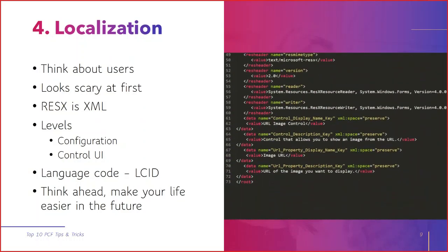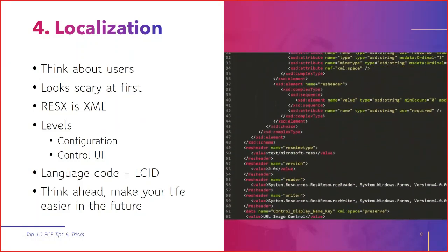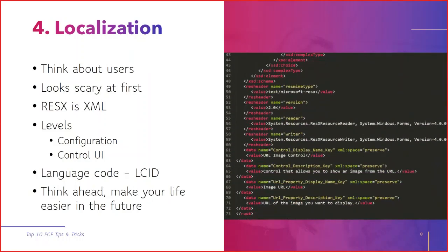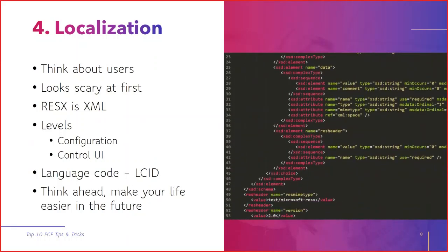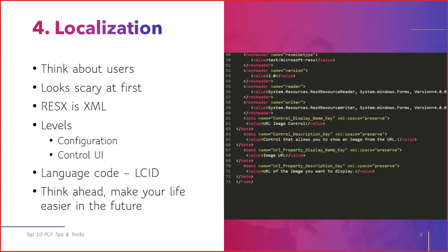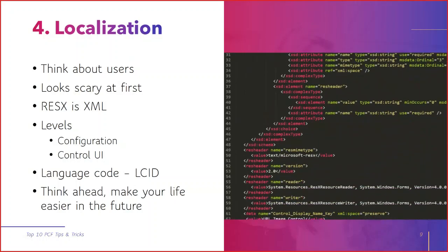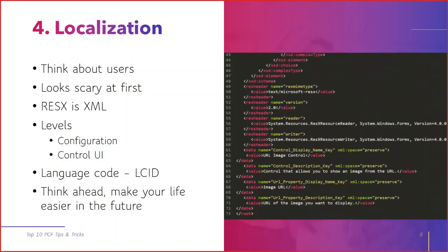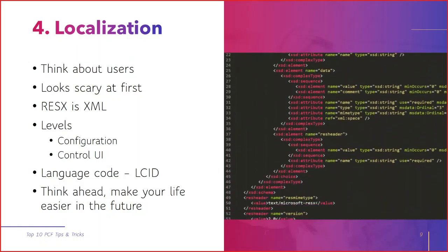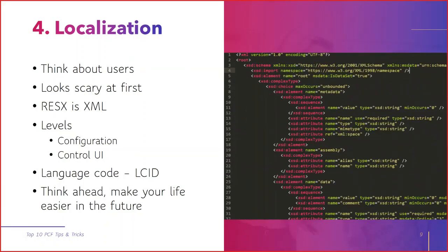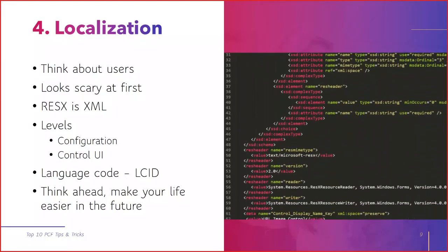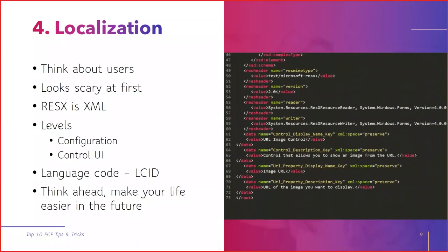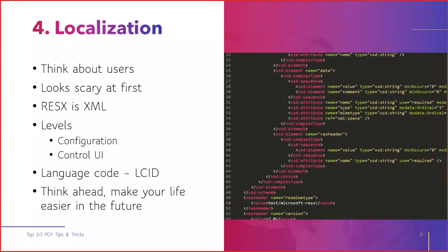The language code IDs are numbers that define the language - you can find them all around the web. You can easily create ResX files via community tools. For example, PCF Builder has a function that will pop out the language list - you pick the language and boom, you will have the ResX file added to your manifest and to your strings files. If you think ahead and include at least one translation file, for example an English translation file, it will be much easier in the future to include more languages. You just add a ResX file for that language, populate all the values inside that XML - the keys will be the same, you just change the values - and boom, you have a new language for your control.